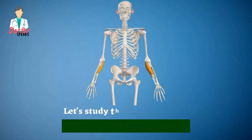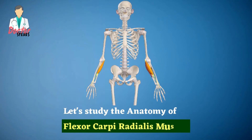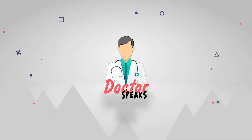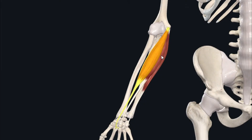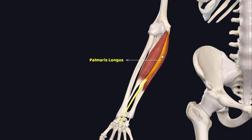Hi viewers, welcome back. Today we are going to have a look at the anatomy of the flexor carpi radialis muscle. The flexor carpi radialis is a fusiform muscle of the superficial anterior compartment of the forearm, also called the flexor compartment of the forearm. This muscle lies just lateral to the palmaris longus muscle.